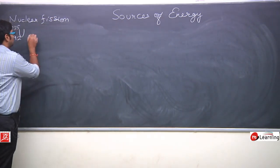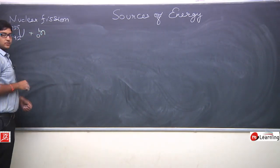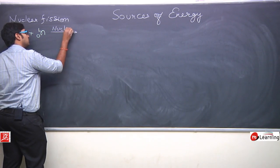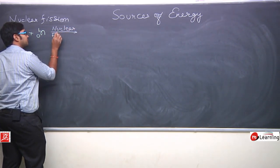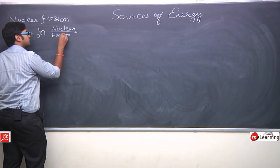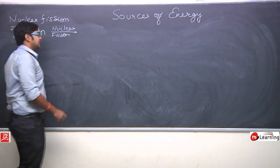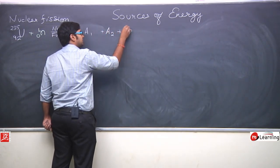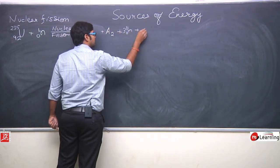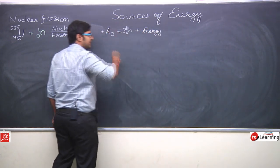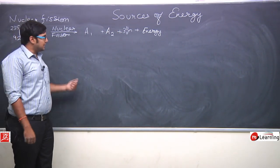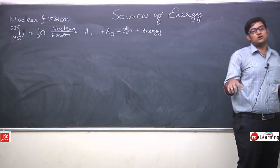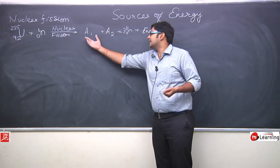When uranium-235 is bombarded with a single neutron, this process will create nuclear fission. Due to this nuclear fission, we get element A1, element A2, plus 3 neutrons, plus energy. This reaction carries forward in this way. Uranium was taken from different places, bombarded with neutrons, and checked to see which elements are produced.